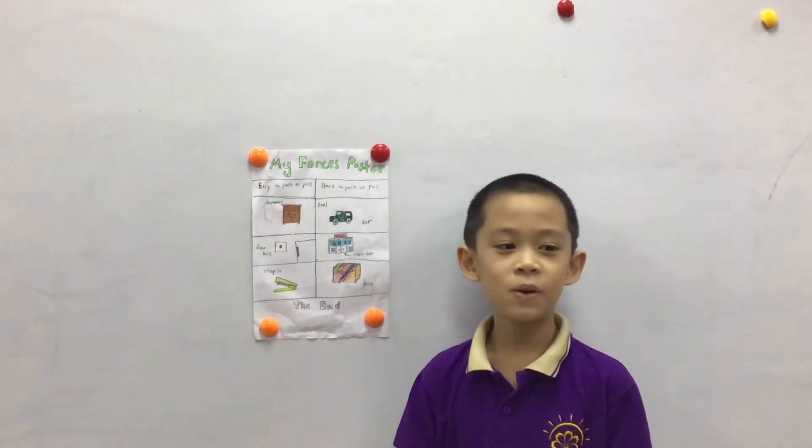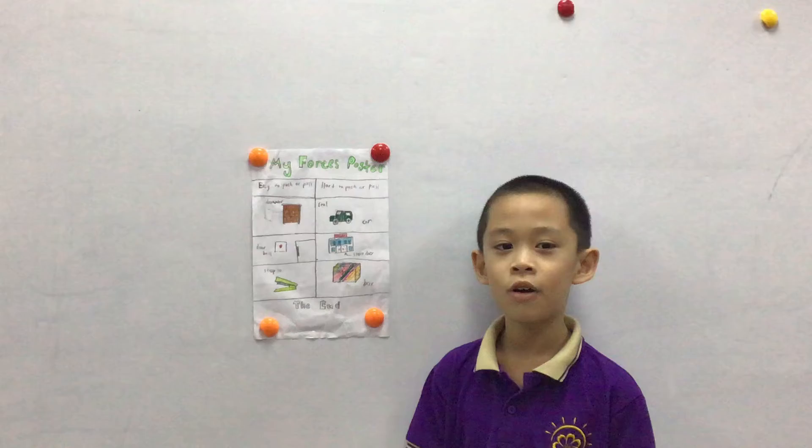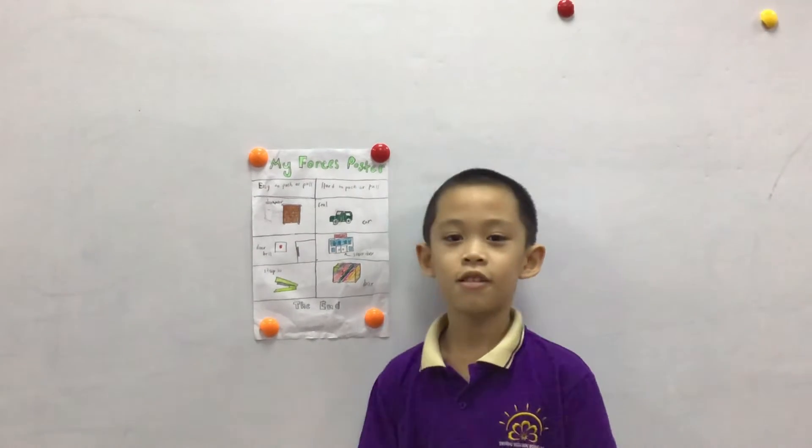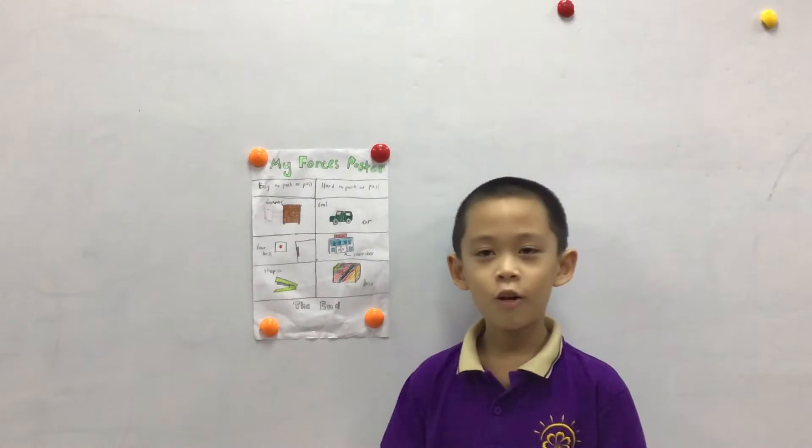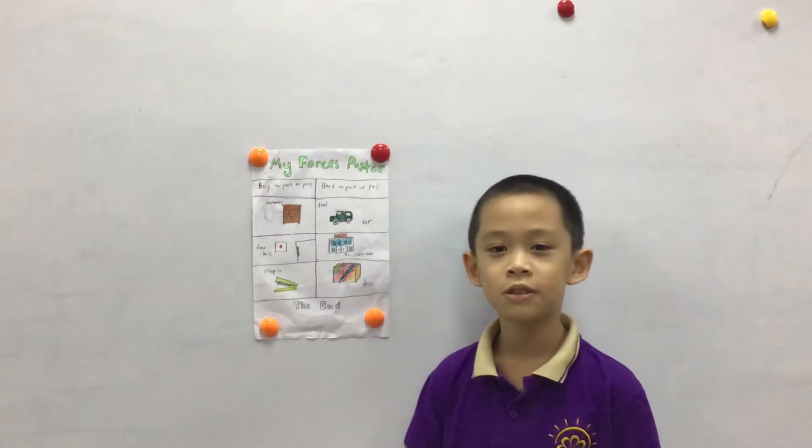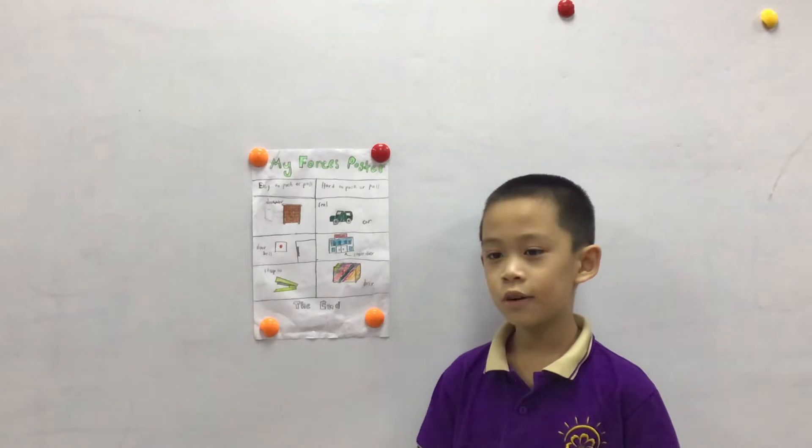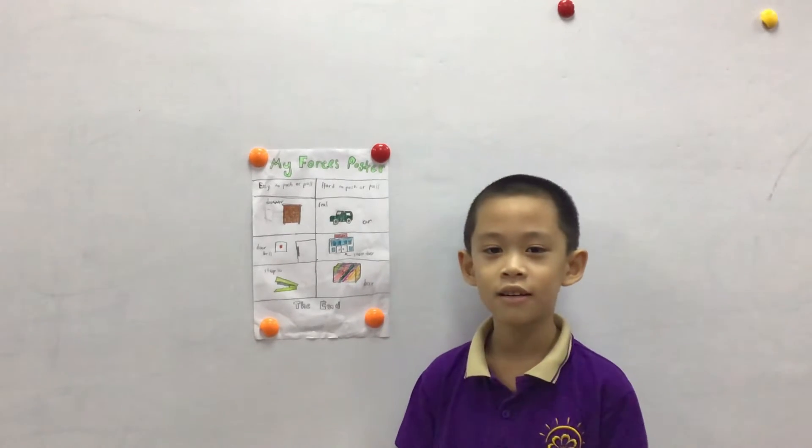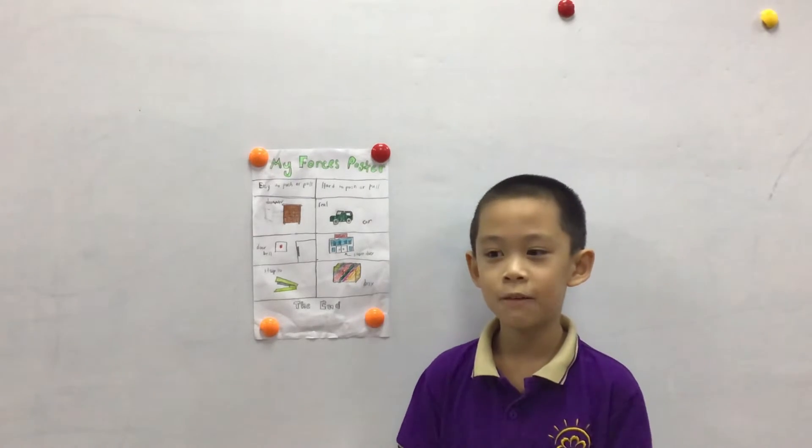We do that when we are at home, at school, or at the office. The second thing that is easy to push or pull is the doorbell. We push it to call someone in the house so they can go out and you will come in.